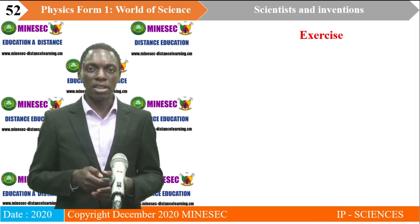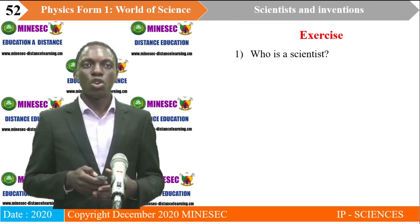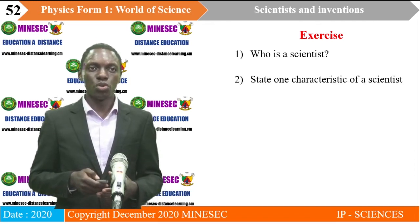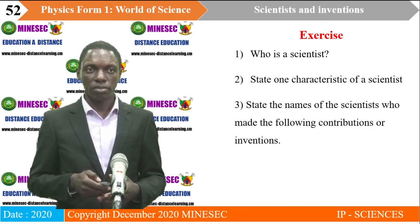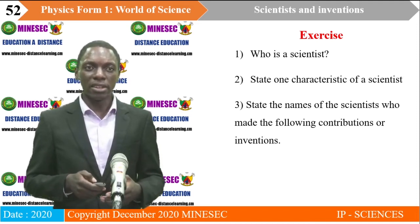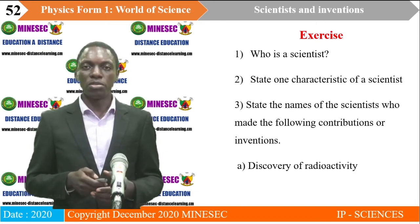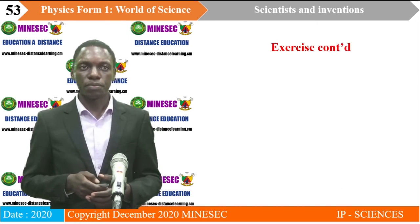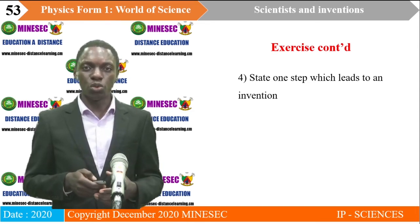Now, let's have an exercise that covers all we have treated in the lesson. Question one: who is a scientist? Question two: state one characteristic of a scientist. Question three: state the names of the scientists who made the following contributions — A, discovery of radioactivity; B, invention of the electric bulb. Question four: state one step which leads to an invention.